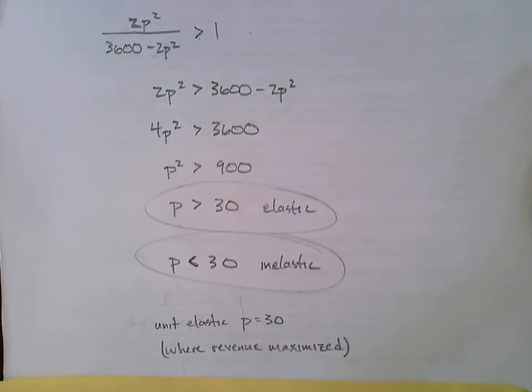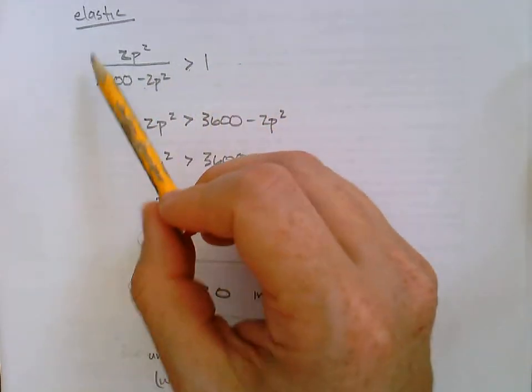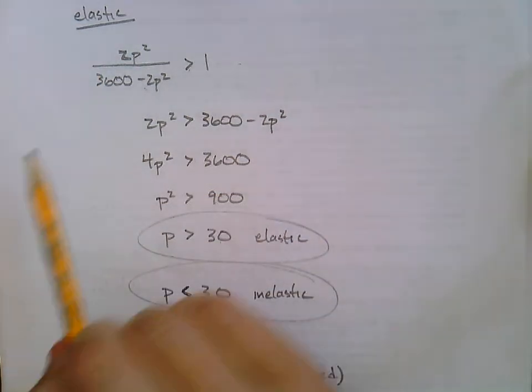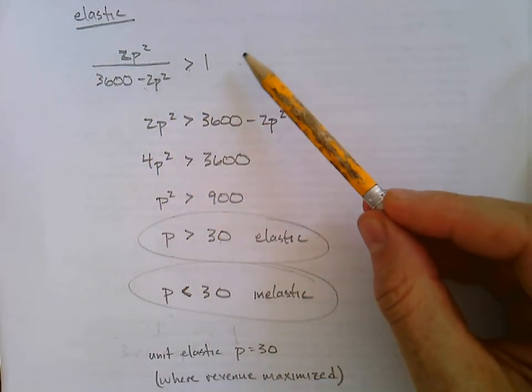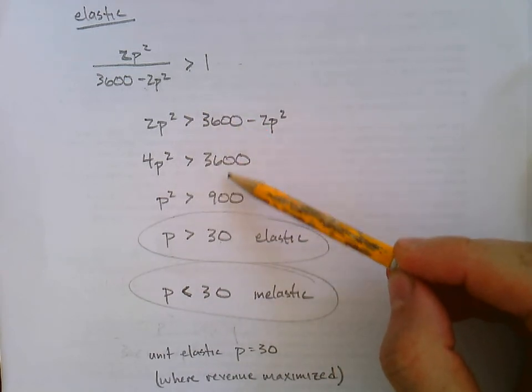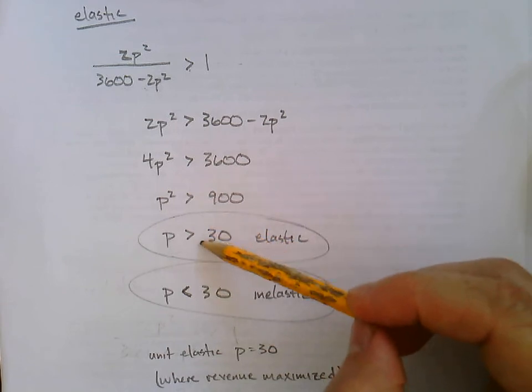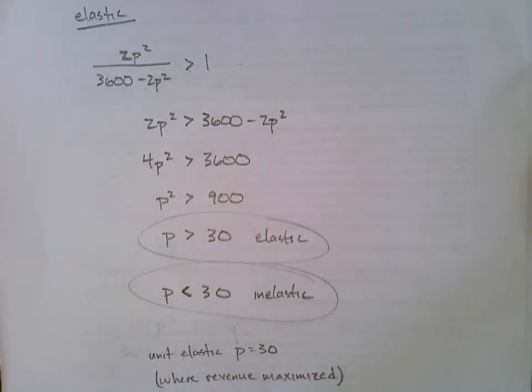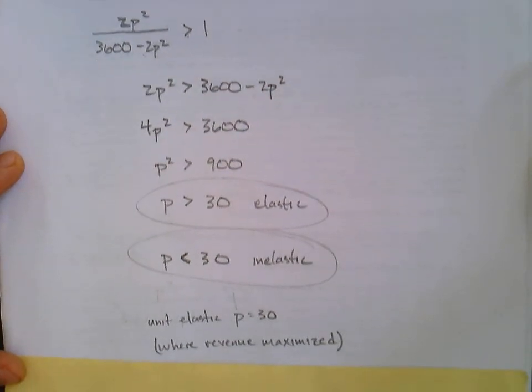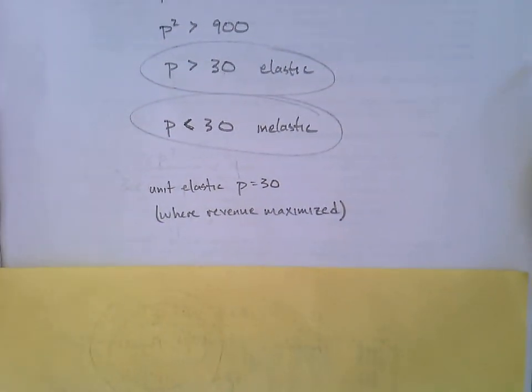To explain it a different way, we could have set this up differently from the beginning or inequality. We could have been looking for when it's inelastic and that would just change the inequality. But as far as our work goes, we would be doing all the same work. We'd just be working with a less than sign every time, and we'd arrive at p less than 30 is inelastic in the same way that we did. So there's really no reason to repeat that.